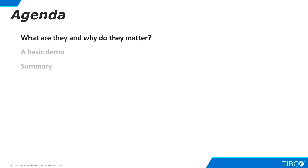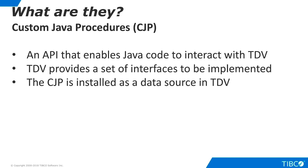Let's begin by discussing what custom Java procedures are and why they are important for our customers. TDV provides an API that enables Java programmers to write code that interacts with TDV. The API is an interface that the Java programmer implements. A custom Java procedure, or CJP, is installed in TDV as a type of data source.